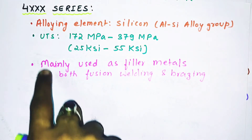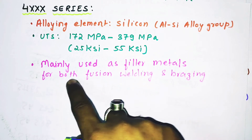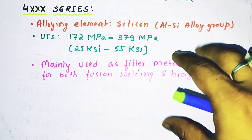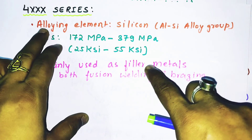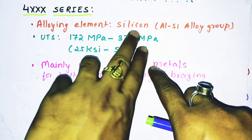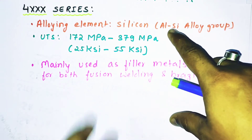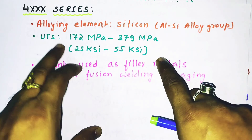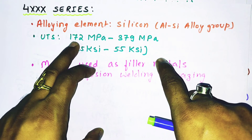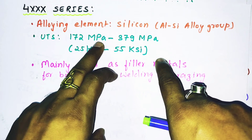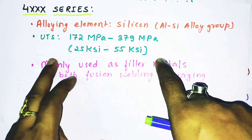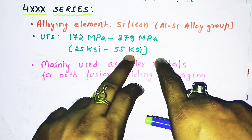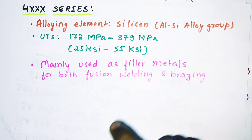The 4xxx series is designed specifically to be used as filler metals for both fusion welding and brazing. The alloying element is silicon, so it is also known as the aluminum-silicon alloy group. The tensile strength ranges from 172 MPa to 379 MPa (25 ksi to 55 ksi).